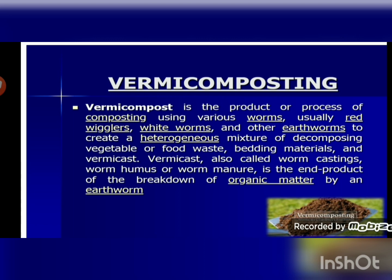Vermicompost is the product or process of composting using worms. In regular compost, only waste is put in the pit and covered. In vermicompost, along with the waste, some worms are also added. These worms increase the process of decomposition and make it faster — they break down the organic matter and convert all the waste material into compost. The difference between compost and vermicompost is that in vermicompost, earthworms are used to turn the waste and make the decomposition process faster.